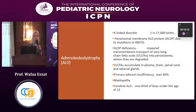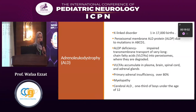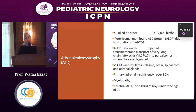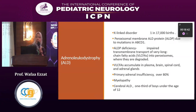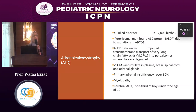Adrenal leukodystrophy is an X-linked disease with a prevalence of one in 17,000 persons. It affects the peroxisomal membrane via the adrenal leukodystrophy protein, resulting from a mutation in the ABCD1 gene. This deficient protein leads to impairment of transmembrane transport of very long chain fatty acids into the peroxisomes — the sites where they are degraded. As a result, very long chain fatty acids accumulate in the plasma, brain, spinal cord, and adrenal gland.